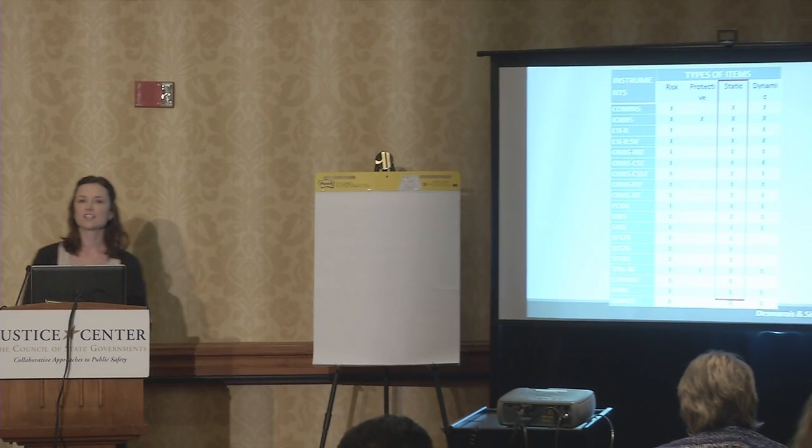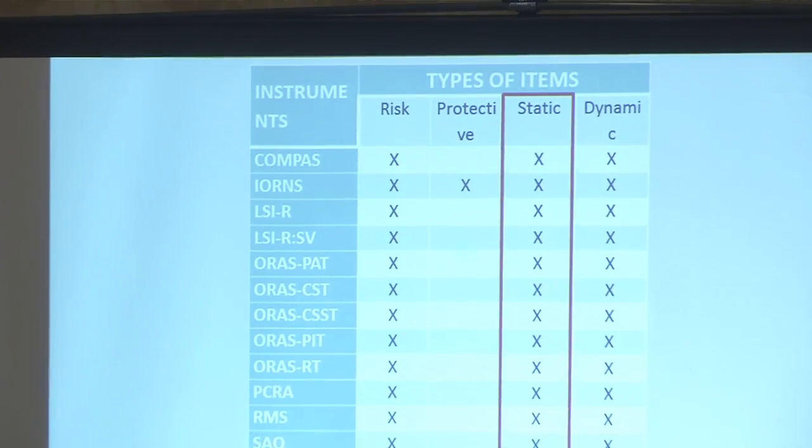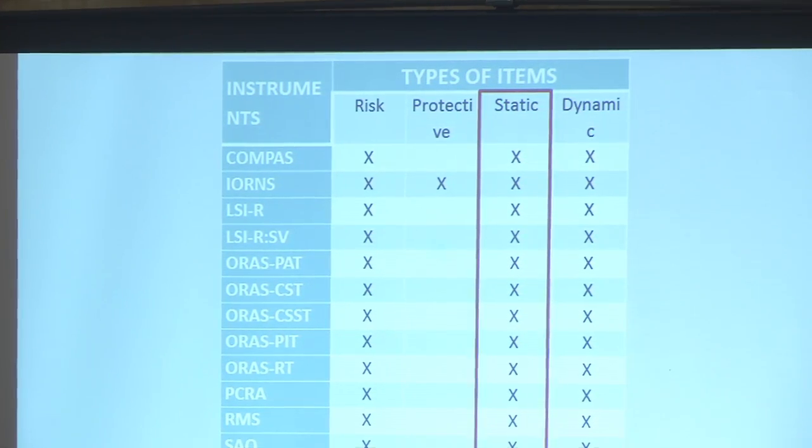One important thing to point out is that there is no instrument of which I'm aware that actually includes race as a risk factor — let's be very clear. What we're then concerned with are these categories of items reflected on by Eric Holder, particularly these issues of static factors. As part of this project I went through and categorized what types of items were showing up in these instruments. Nobody will be surprised that every one of these 20 instruments we identified had static risk factors as a foundation of their assessment. Static risk factors are incredibly robust predictors of outcome — whether it's criminal offending or any other behavior.